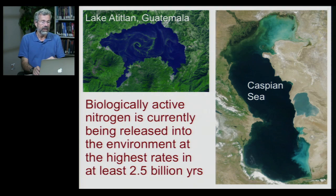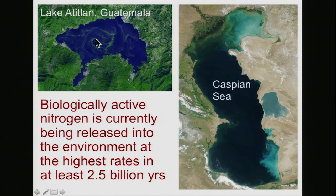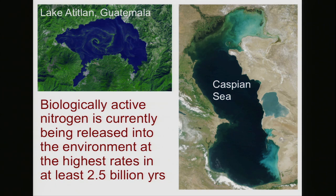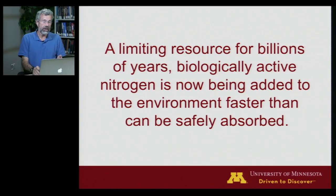Here are two examples of excess nitrogen: a lake in Guatemala where you can see massive algal growth visible from space, and the Caspian Sea in Eurasia, where fertilizer washed off surrounding croplands is causing algal blooms. It's a phenomenal change happening because of the fertilizer we've applied over the last 100 years or so. The consequence is that we're now adding biologically active nitrogen to the environment at a rate not seen in the last two and a half billion years — a limiting resource for billions of years is now being added far faster than can be safely absorbed.